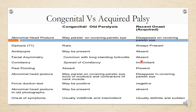In recent or acquired palsy, the squint is incomitant and other muscles are working fine. Past pointing will be absent in congenital or old cases but present in recent cases. Abnormal head posture may persist on covering the eye in old cases, as already discussed. Force duction test is used to differentiate congenital from acquired palsies — it will be positive in congenital cases and negative in recent or acquired palsies. Abnormal head posture will also be visible in old photographs of a patient with congenital palsy, but absent in all photographs of acquired patients.